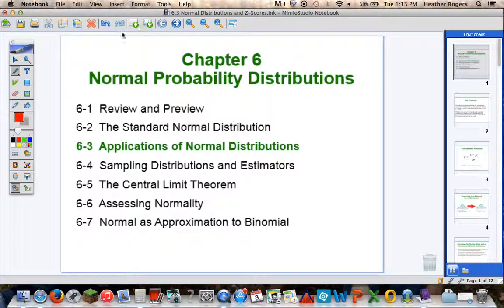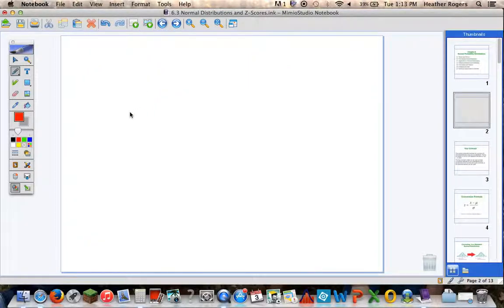Back in 6.2, the standard normal, we talked about how we could take a normal distribution with a mean of 0, a standard deviation of 1, and understand that the area under the curve, as long as it was normal, added up to 1. We understand that our probabilities add up to 1.